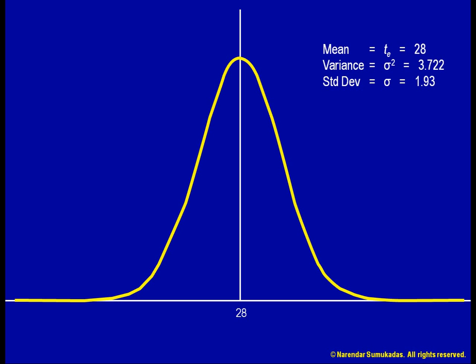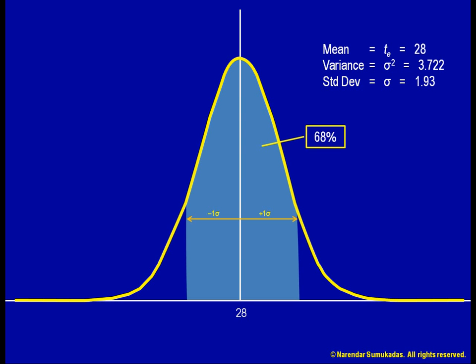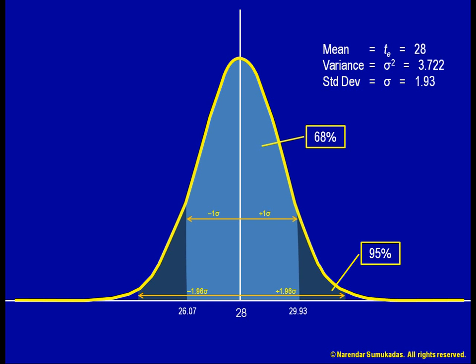Based on the properties of the normal distribution, we can estimate that there is a 68% probability that the project will be completed within plus or minus one standard deviation from the mean. That is, there is a 68% probability that the project will take between 26.07 and 29.93 days. Likewise, there is a 95.5% probability that the project will be completed within plus or minus two standard deviations. To get a 95% probability interval, we look for plus or minus 1.96 standard deviations rather than plus or minus two standard deviations.